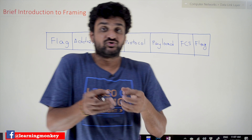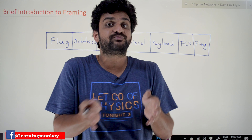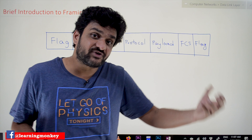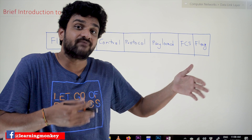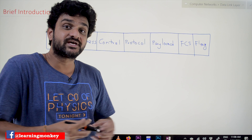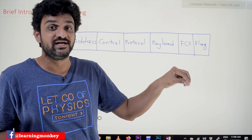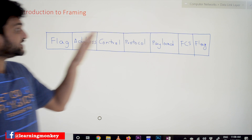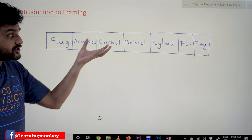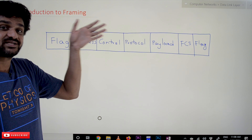We have already discussed that each and every layer is going to perform certain functionalities. Based upon the type of functionalities that a layer performs, we have to add some extra bits. By using those extra bits we can perform the functionalities that ought to be done by that specific layer. In the data link layer, these are the control fields which describe the functionalities of this layer.